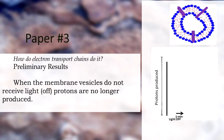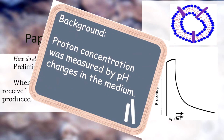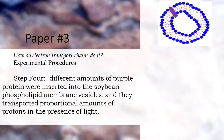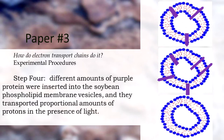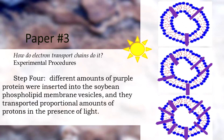When the light was turned on, protons were transported in their membrane vesicles, and when the light was turned off, proton production stopped. They measured proton concentration by measuring pH changes in the medium. The next step was to make membrane vesicles with different amounts of purple protein. When they turned on the light, the amount of protons transported was proportional to the amount of purple protein.